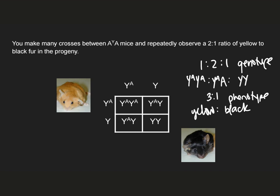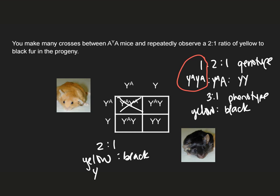The solution is: what if you never observed those homozygous AY AY mice at all? In fact, that is what happens, because this allele that confers yellow coat color also causes other effects in the mouse — it is pleiotropic. One of those effects is mortality at a very early stage of development, such that you would never even see those pups being born. When you take those homozygous AY AY mice out of the possible progeny you could observe, you end up seeing a two-to-one ratio of yellow to black, where all of the yellow mice are heterozygous.